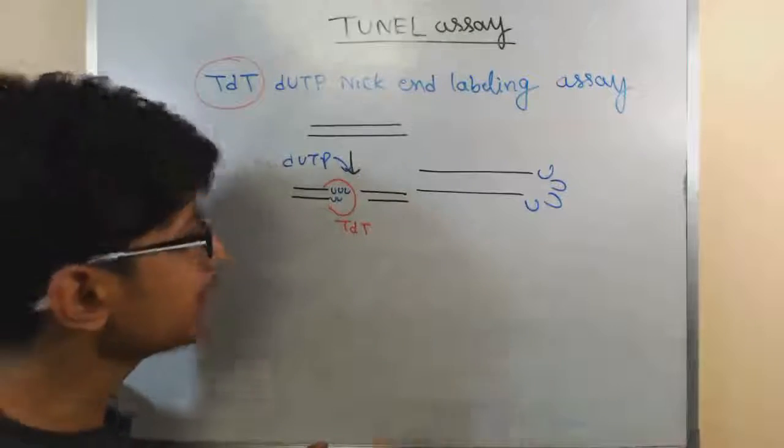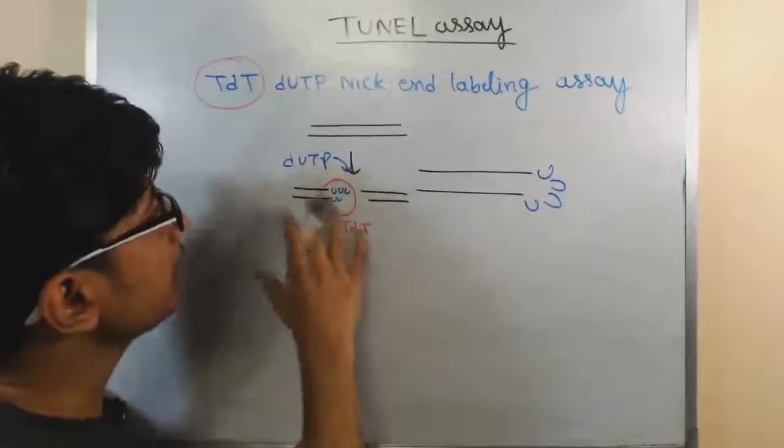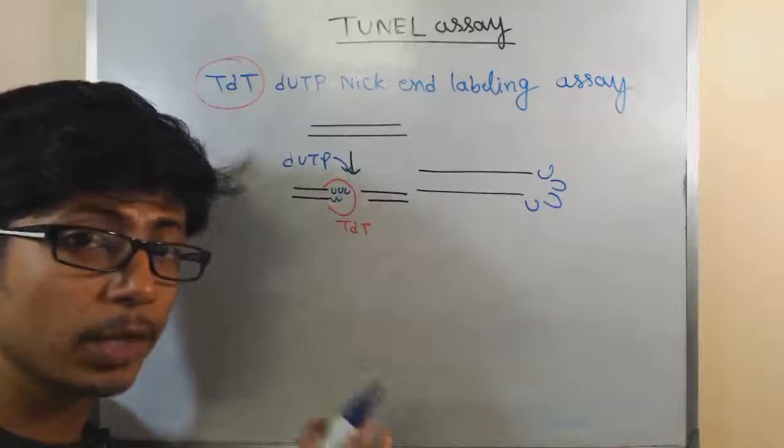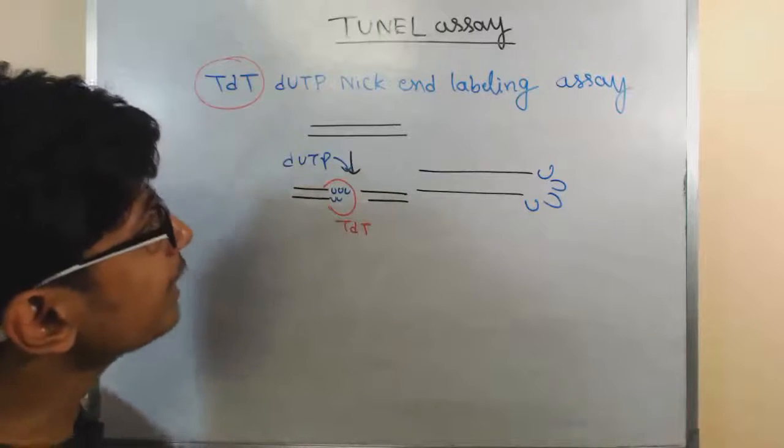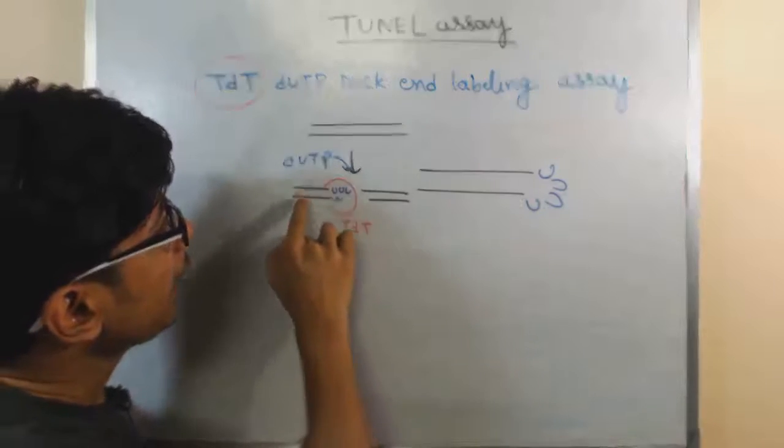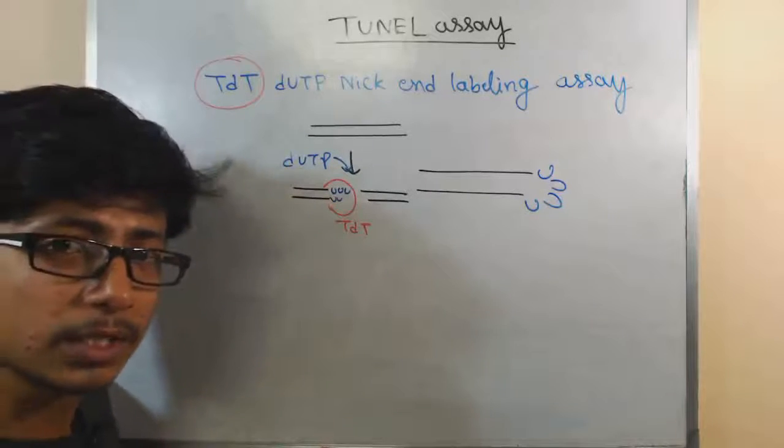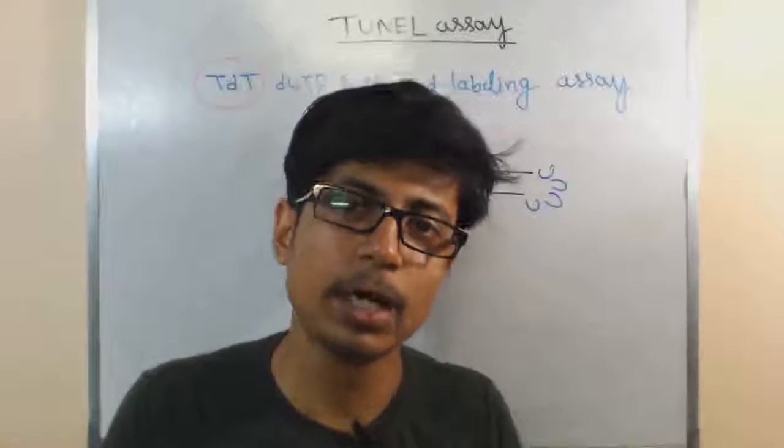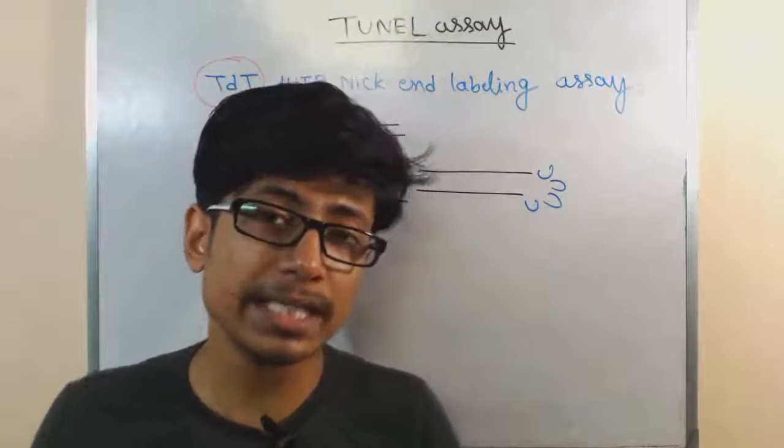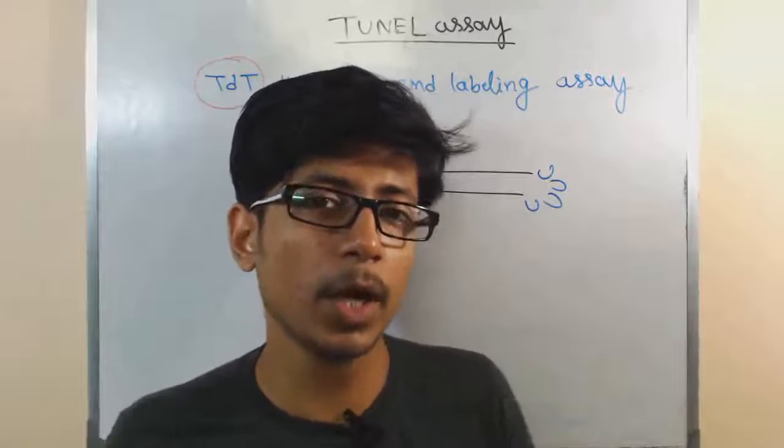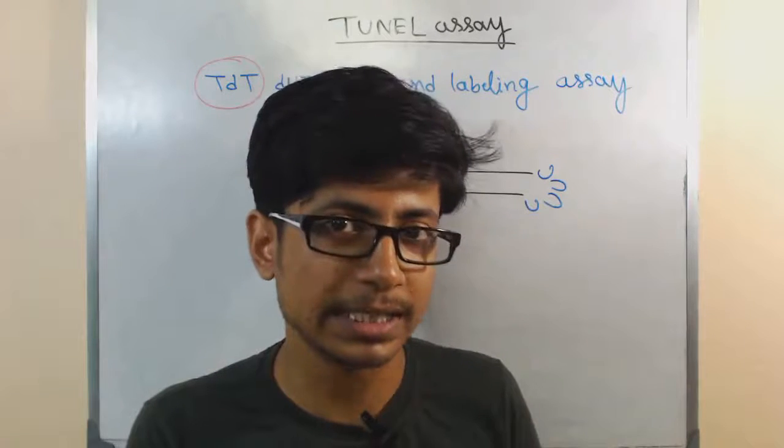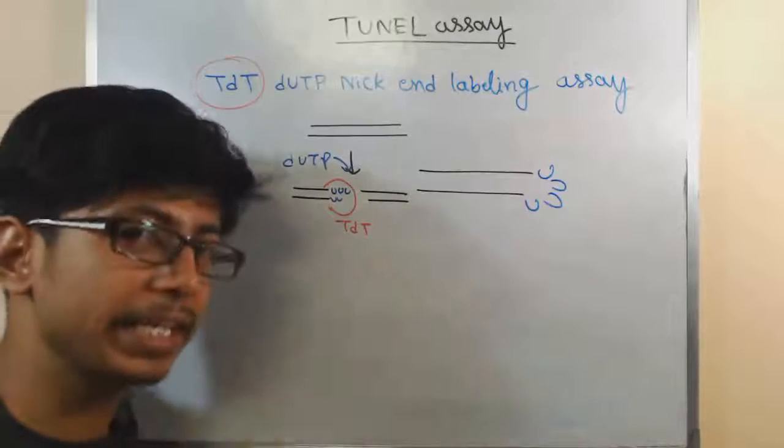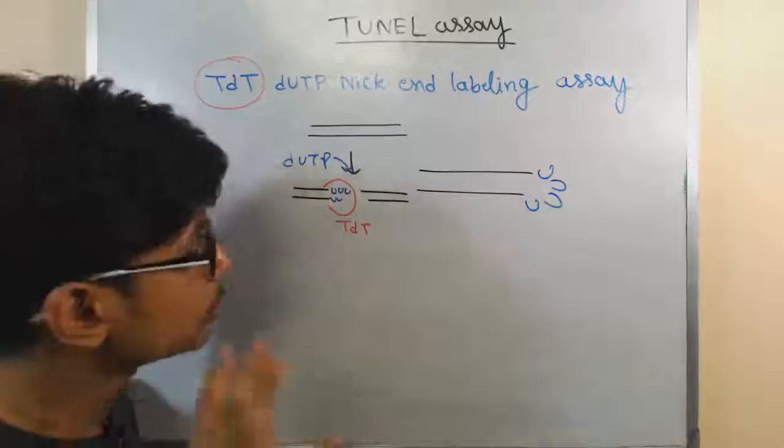So, if there is double-stranded break a lot, TDT will be recruited. TDT will start adding dUTPs there to form a loop-like structure to make them closed. Now, the idea here is that during this process, TDT will be recruited a lot when there is breakdown of DNA going on inside the cell. So, inside the cell if there is breakdown of DNA going on, that means the cell is undergoing apoptosis. So, we can correlate apoptosis with the amount of TDT acting inside the cell.